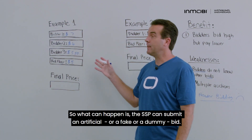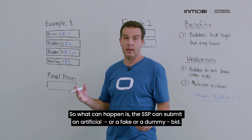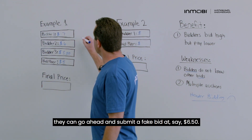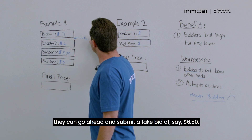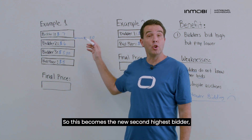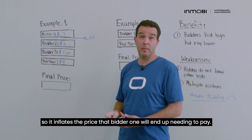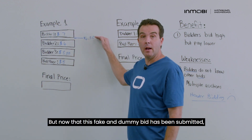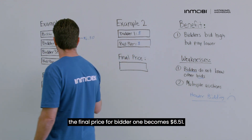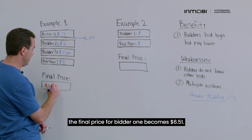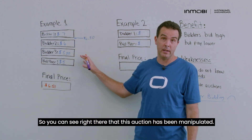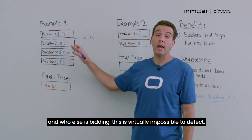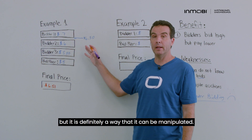What can happen is the SSP can submit an artificial, fake, or dummy bid. Once all bids have come in, if the SSP wants to drive up the price to gain more revenue, they can submit a fake bid at, say, $6.50. This becomes the new second highest bid and inflates the price bidder one will need to pay. Before the fake bid, bidder one would win and pay $6.01. But with the dummy bid submitted, the final price for bidder one becomes $6.51. Because bidder one has no insight into the other bids, this is virtually impossible to detect.